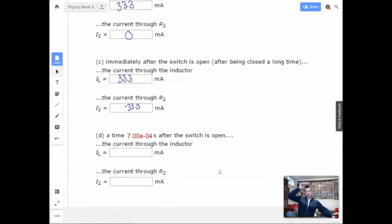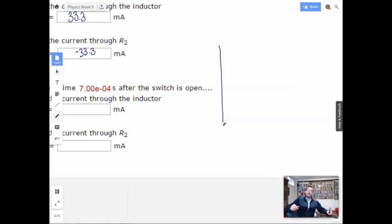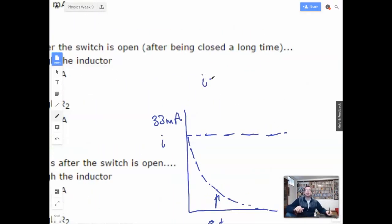At time 7 times 10 to negative 4th seconds after the switch is open, the current through the inductor is. Okay, so we're going to have some sort of decay here. We'll have a T, we'll have a current, we'll have the initial current we saw, which will be 33 milliamps, and it's going to die down like this. And we're looking at this time right here, which happens to be 7 times 10 to negative 4th seconds. So I'm going to start by writing our formula. So I'm going to say that current equals initial current times E to negative T over tau.